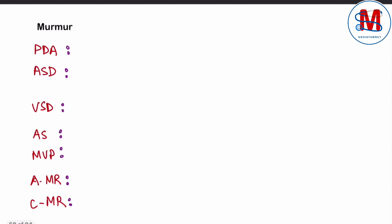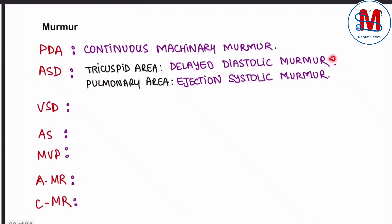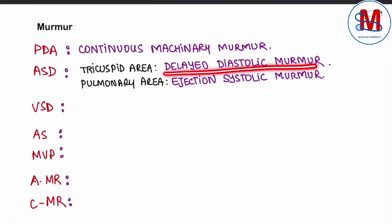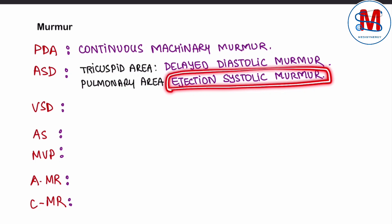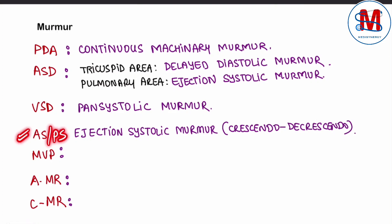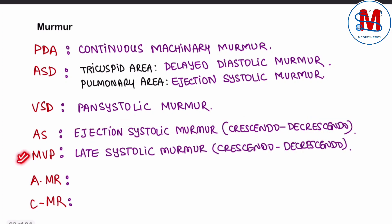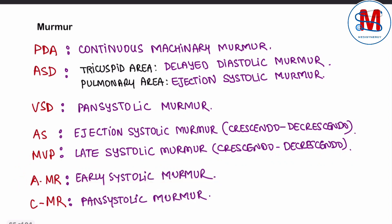Now let's talk about important murmurs. PDA — patent ductus arteriosus — has a continuous machinery murmur. Atrial septal defect: ejection systolic murmur at tricuspid/pulmonary area. Ventricular septal defect: pan-systolic murmur. Aortic stenosis and pulmonary stenosis: ejection systolic crescendo-decrescendo murmur. Mitral valve prolapse: late-systolic crescendo-decrescendo murmur. Acute MR: early systolic murmur. Chronic MR: pan-systolic murmur.